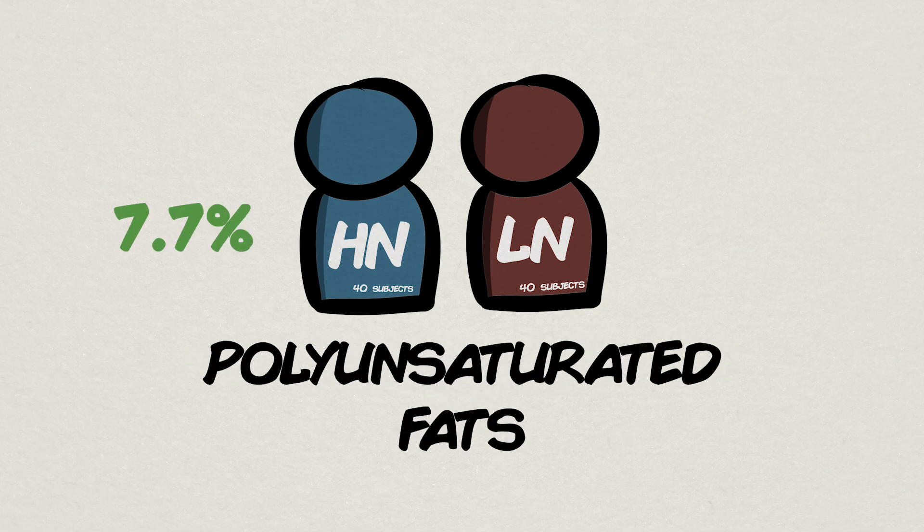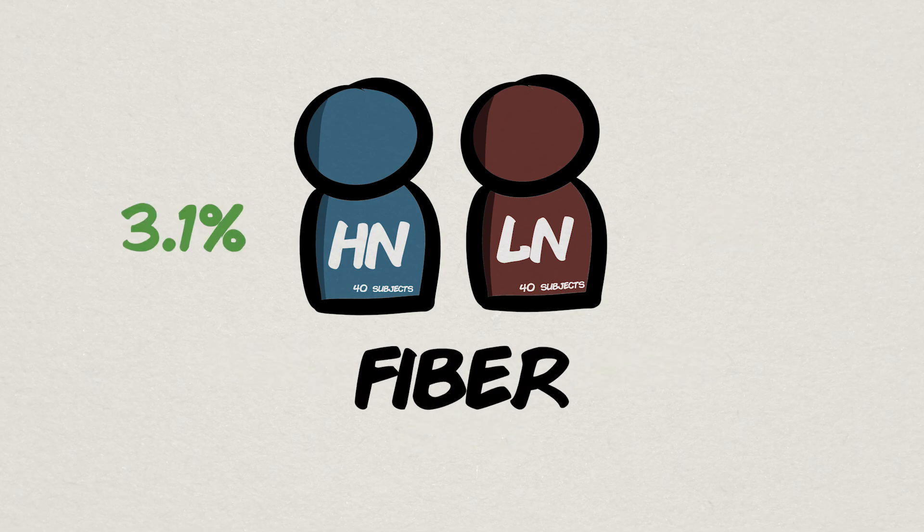7.7% of energy intake went to polyunsaturated fats for the high-nutrient quality group, 4.1% for the low-nutrient quality group. 3.1% went to fiber for the high-nutrient quality group, only 2.2% for the low-nutrient quality group.